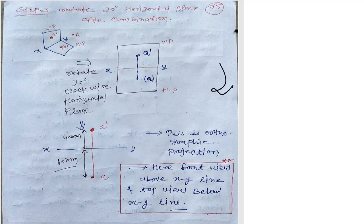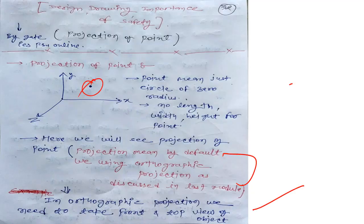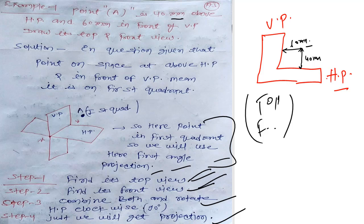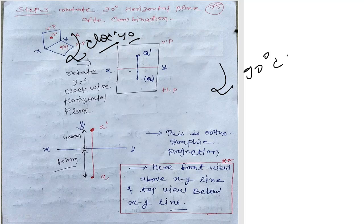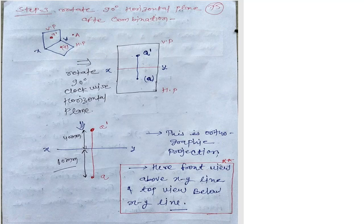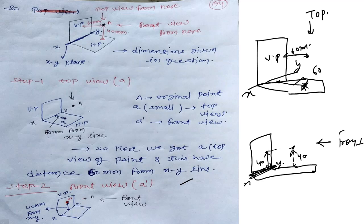Step three: combine both views and rotate 90 degrees clockwise. The a-dash point on the vertical plane is fixed; the XY line is fixed. The horizontal plane rotates down 90 degrees and you get the final structure. From the front view the distance above XY is 40mm, and from the top view the distance below XY is 60mm — these are the two dimensions.